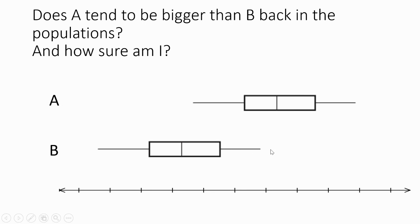That is also true if you look at something that's a little bit closer. There is still that level of separation in the sample, so we still have three quarters of A bigger than three quarters of B, and that's sufficient to think that with this jitter, A would have a tendency to be further up the scale than B — so A would tend to be bigger than B back in our populations based on the sample result.